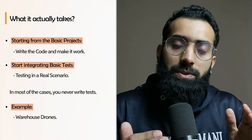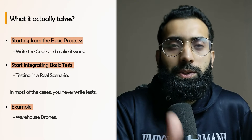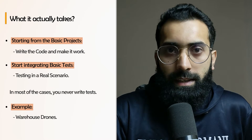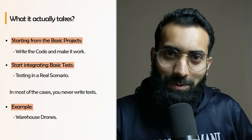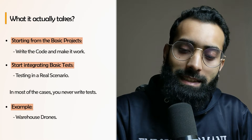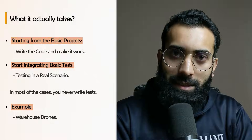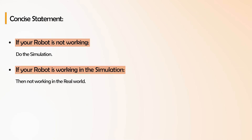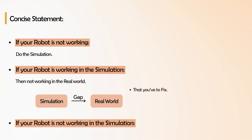For example, warehouse drones that look at packages and barcodes and upload data into the ERP system of the warehouse — you're not going to directly build a drone and do that. Actual companies always look for simulation and testing of the idea first. As a friend explained: if your robot is not working, do the simulation. If your robot works in simulation but not in the real world, there is a sim-to-real gap you have to fix. But if the idea is not even working in simulation, definitely do not try it on a real robot. That's why NVIDIA Isaac Sim is very popular — simulation is essential to reach a higher TRL level for robots.